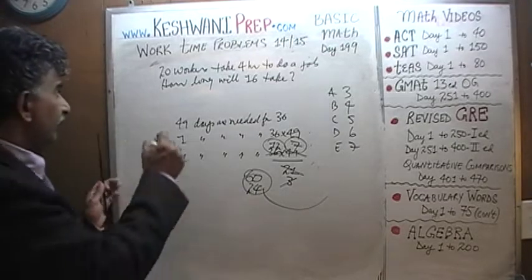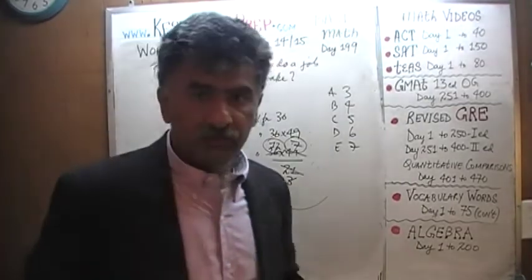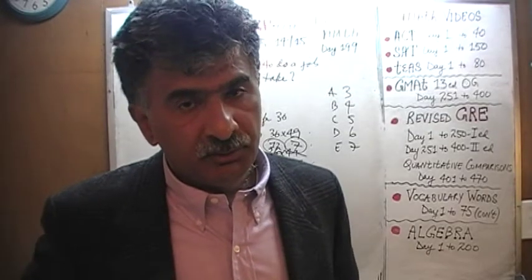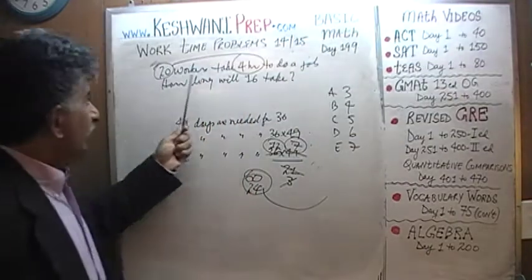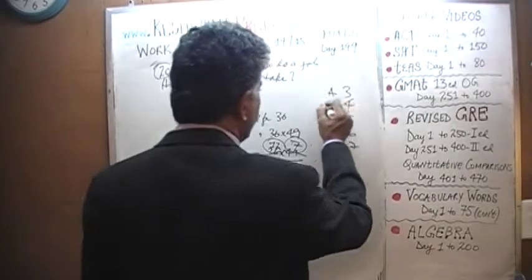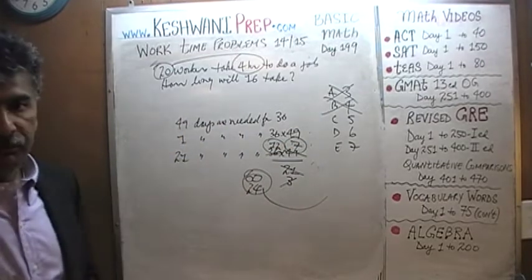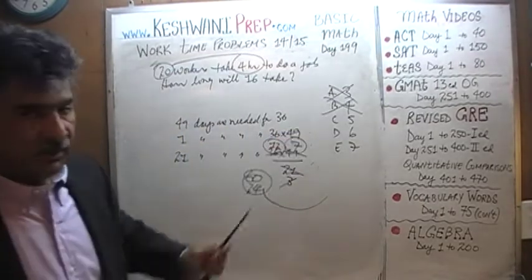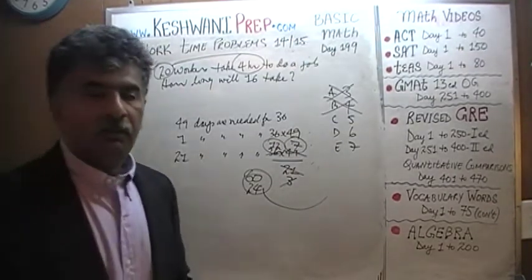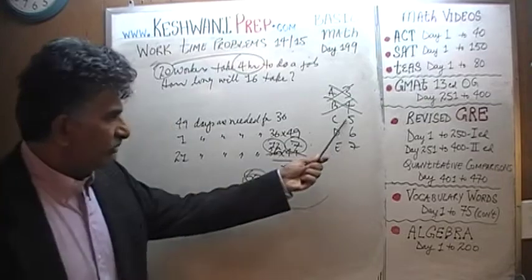All right. It tells us that 20 workers take 4 hours. If you put in only 16 workers — fewer workers — logic dictates it will take longer. If 20 of them take 4 hours, then 16 workers must take more than 4 hours. It cannot be 3 or 4 hours — that's illogical. The answer has to be 5, 6, or 7.